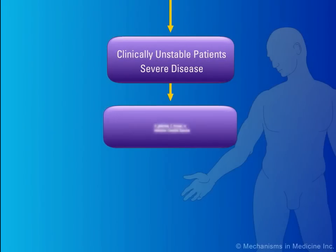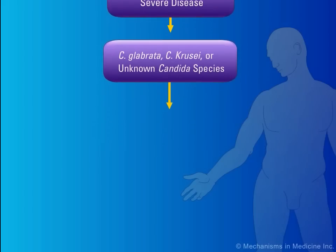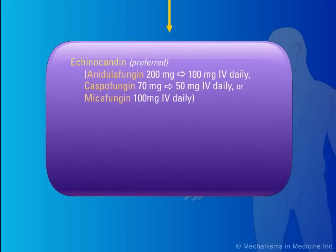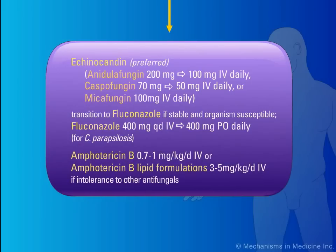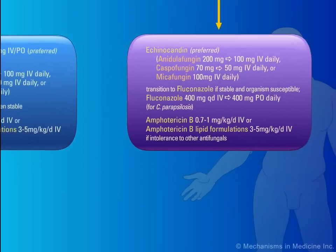If the patient has severe disease and is in an unstable condition, or has an infection due to Candida glabrata, Candida krusei, or an unknown Candida species, the following therapeutic considerations are preferred. It is preferred that treatment is initiated with an echinocandin. Subsequently, if the patient stabilizes and is afebrile and the Candida species proves to be susceptible to fluconazole, then fluconazole may be employed due to its lower cost and ease of administration. Amphotericin B or a lipid formulation of Amphotericin B should only be used if the patient is intolerant to other medications or other antifungals are not available.